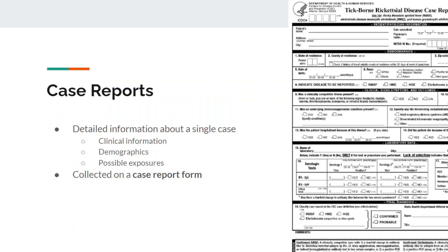A lot of times people get case reports and case definitions mixed up because they sound so similar. A case definition is broader — you apply a definition to many different things. A case report is for one single person; you're reporting information about one individual. On the right is an image of a case report form for Rocky Mountain spotted fever. It includes demographic information like name, address, location, risk factors, race, clinical information like symptoms, and possible exposures — for example, a bubonic plague case report could have exposure to animals and disease-specific symptoms like buboes.